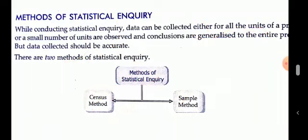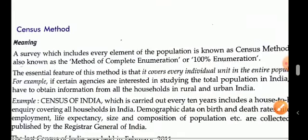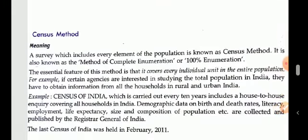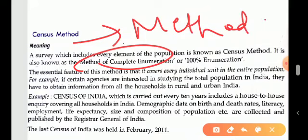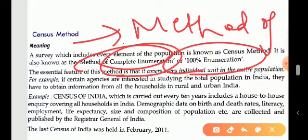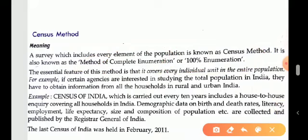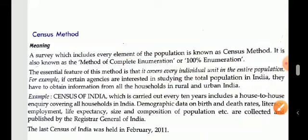The census method is a survey which includes every element of the population, hence it is known as the method of complete enumeration or 100% enumeration. Each and every item is studied here. The essential feature of this method is that it covers every individual unit.